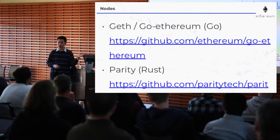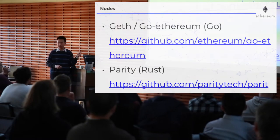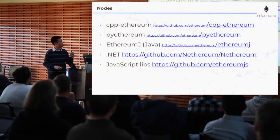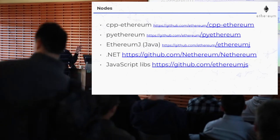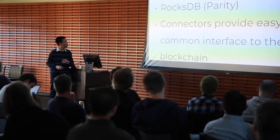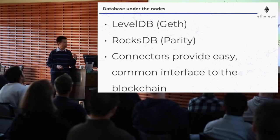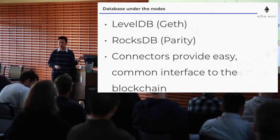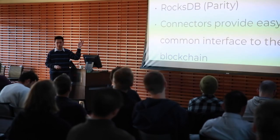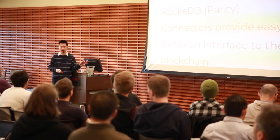The nodes you can run come in a variety of implementations. Two popular ones are written in Go and Rust: GoEthereum, also called Geth, and Parity, written in Rust. There are others written in C++, Python, and EthereumJ is the Java one, plus .NET and JavaScript libraries. The database under the nodes — Geth uses LevelDB, Parity uses RocksDB. The connectors provide a common interface to the blockchain so you don't have to deal with LevelDB or RocksDB APIs directly; you can just use Web3 JavaScript or JSON-RPC.